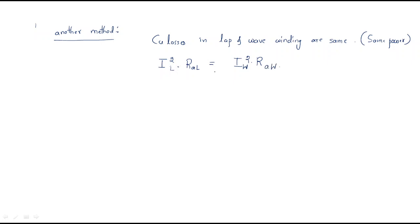From this, we can find that R_aw divided by R_al — wave winding armature resistance divided by lap winding armature resistance — equals the inverse ratio. That means it is inversely proportional, so we get the lap winding current squared over wave winding current squared.